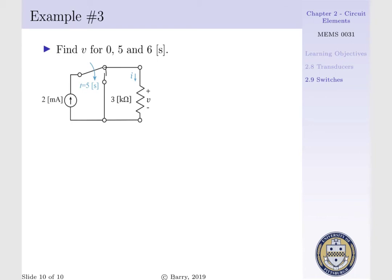Looking at example 3, we want to find V, our voltage potential across a 3 kilo-ohm resistor, for T equals 0, 5, and 6 seconds.